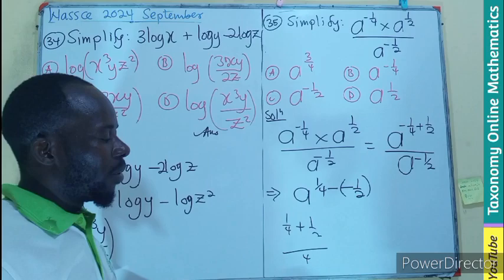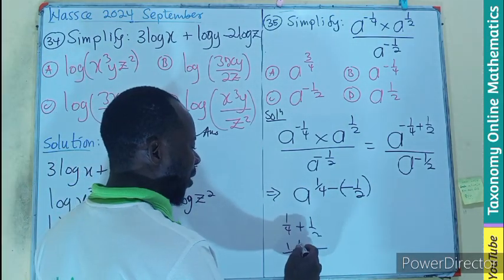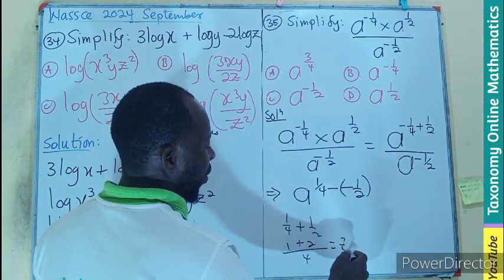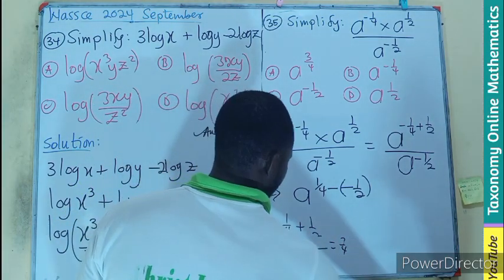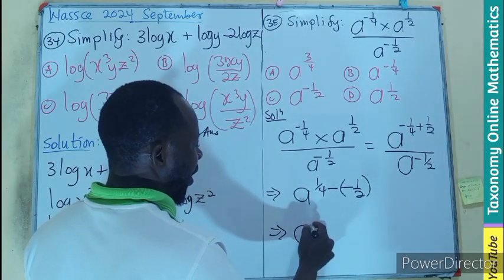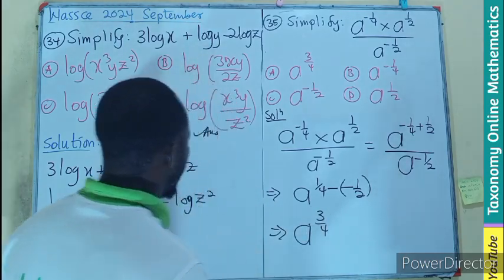LCM will stay with 4. 4 goes into each of 1, 1 times 1 is 1. 2 goes into 4, 2 times 1 is 2. That gives you 3 on 4. So this means that A is raising to the power 3 on 4.